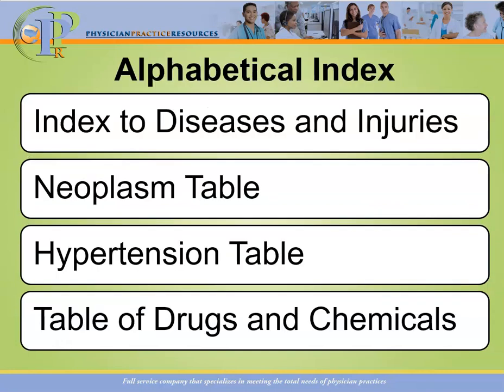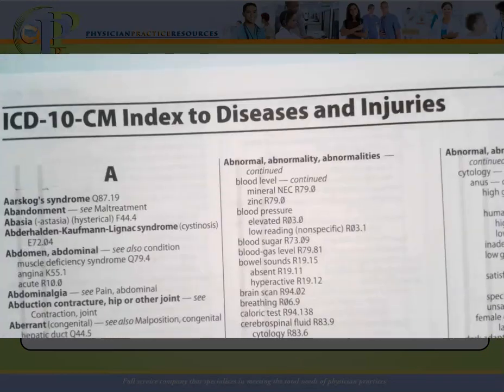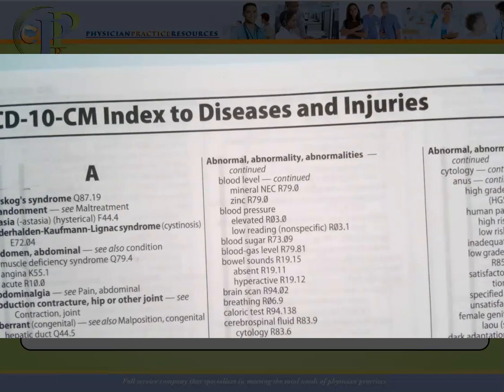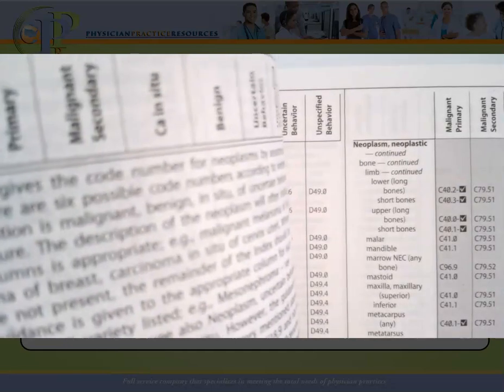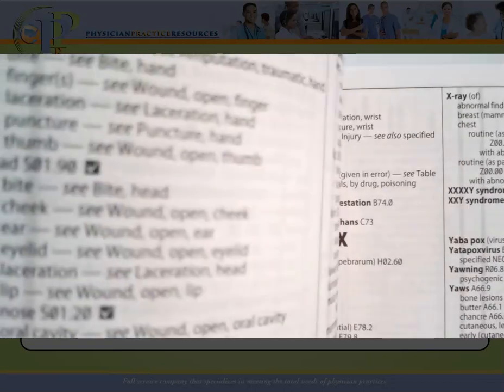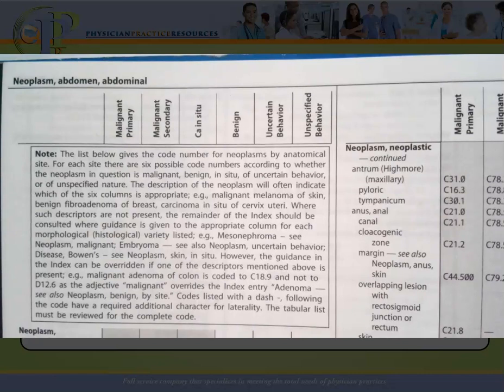The next part of the manual is known as the alphabetical index. The alphabetical index actually starts on page one. Once you get past the guidelines — about 31 pages — you're going to run into the alphabetical index. The alphabetical index is divided into four parts. The first part is the ICD-10-CM index to diseases and injuries, starting on page one. Once you get past the index to diseases and injuries, the next thing you're going to see is the neoplasm table, which starts on page 330 in the 2020 code manual.